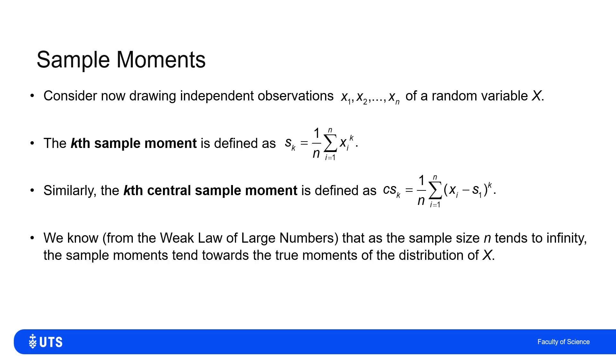Now, we've already seen, if you look back at the previous week's video, the weak law of large numbers, we know that for very large samples, as the sample size tends to infinity, we know that the sample moments should tend towards the true population moments of the distribution. And we can use this to estimate the population parameters from, hopefully, a large enough sample.